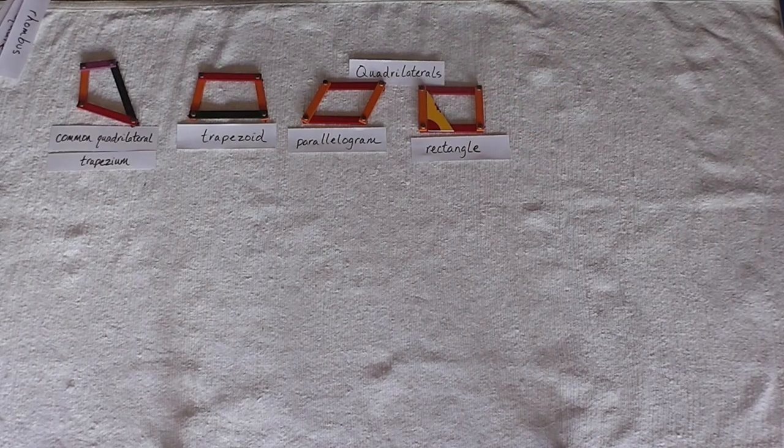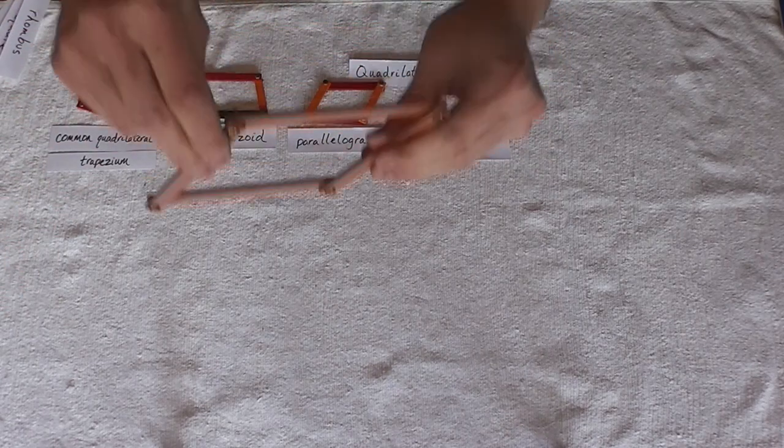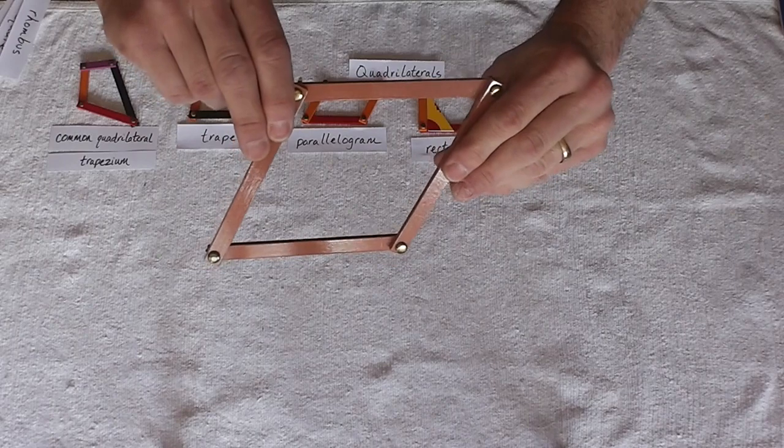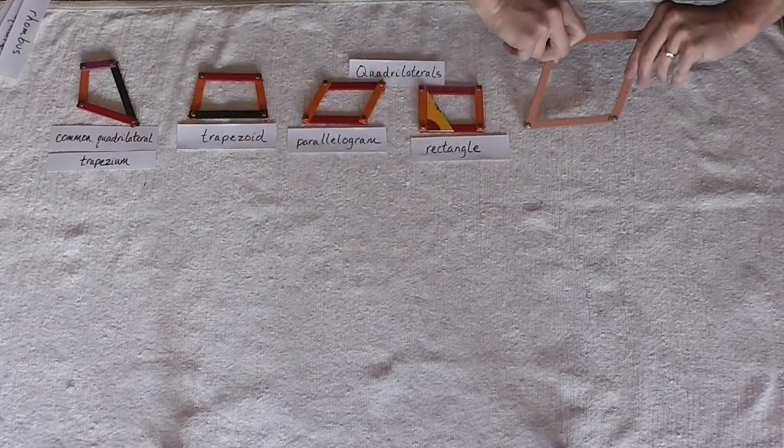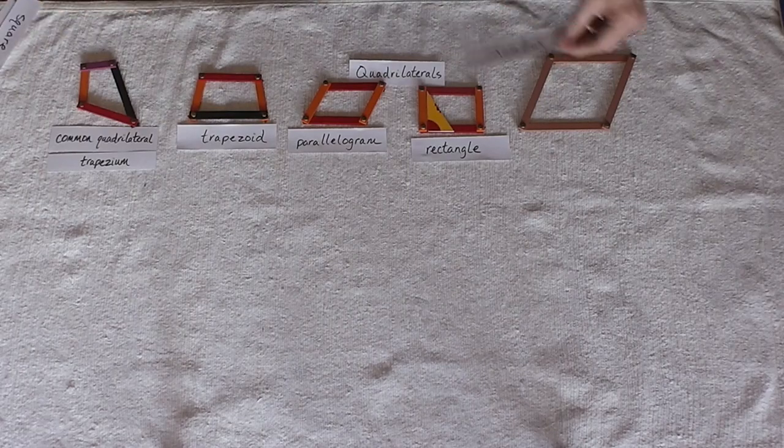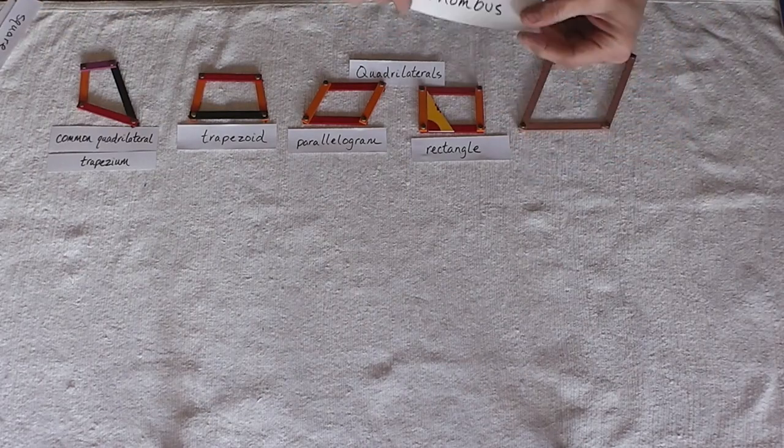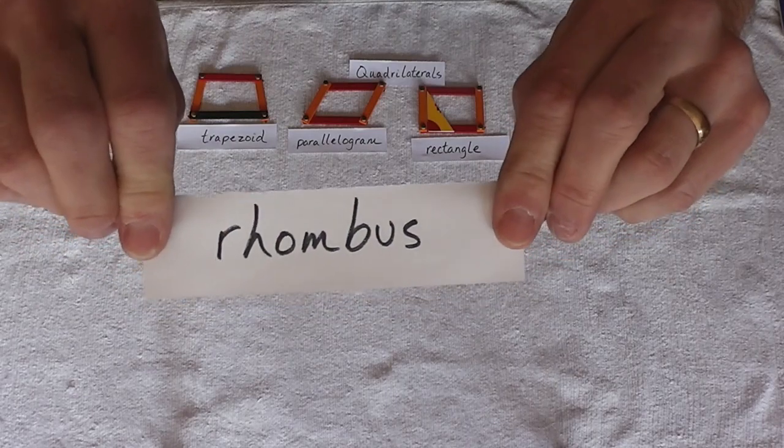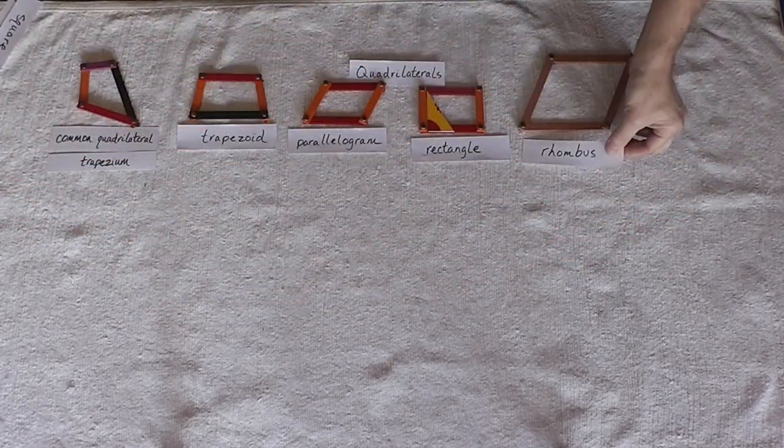Our next shape. Four sides of the same length. It is not a diamond. It is a rhombus. Show you the label. This is a rhombus.